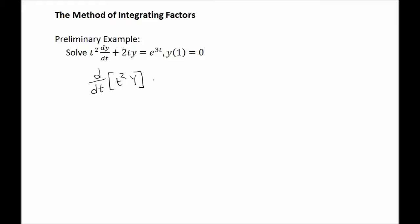That's because you would use the product rule and take the first function, which is t squared, times the derivative of the second function, giving you dy/dt. And then you would add to that the derivative of the first function, which is 2t, multiplied by the second function, y. So the left side of our original differential equation is exactly equal to the derivative of the product t squared times y.